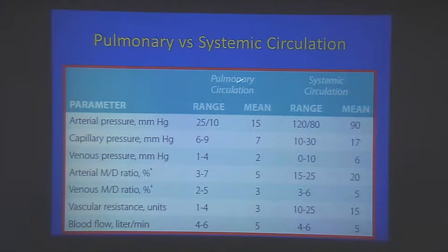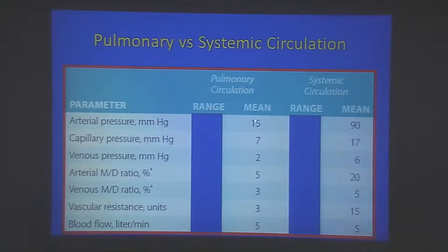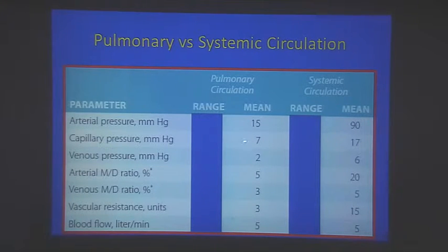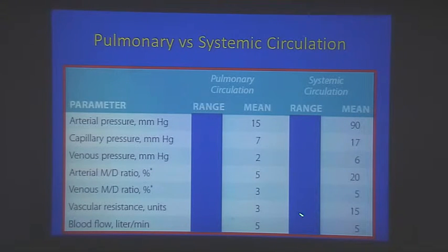Comparing pulmonary and systemic circulation side by side: mean pulmonary pressure is only 15 mmHg versus mean arterial pressure of 90; pulmonary capillary pressure is 7 versus systemic capillary pressure of 17; pulmonary venous pressure is 2 versus RA pressure of around 6. Pulmonary and systemic blood flows are equal in the absence of shunting.